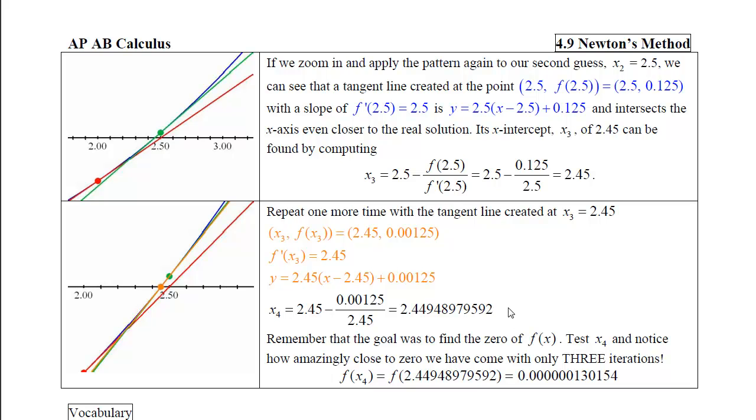Now remember that the goal was to find the 0 of f(x). If we plug this into f(x), we will get an answer or an output that is very, very close to 0. And we have found a solution that is accurate to 1, 2, 3, 4, 5, 6 decimal places, and we only used three iterations of Newton's method.